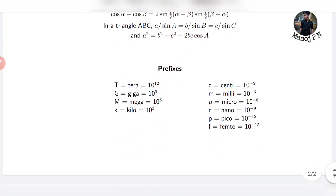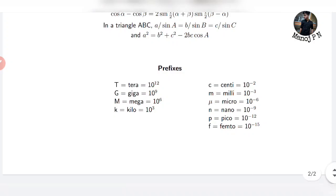Next, SI prefixes: Tera is 10 to the power of 12. Giga is 10 to the power of 9. Mega is 10 to the power of 6. Kilo is 10 to the power of 3. Centi is 10 to the power of minus 2. Milli is 10 to the power of minus 3. Micro is 10 to the power of minus 6. Nano is 10 to the power of minus 9. Pico is 10 to the power of minus 12. Femto is 10 to the power of minus 15.